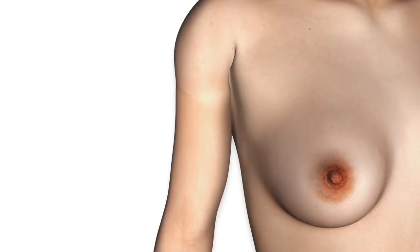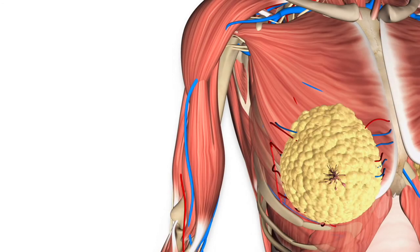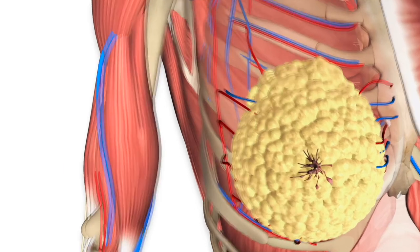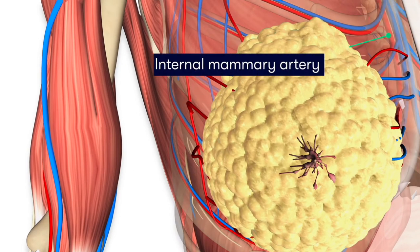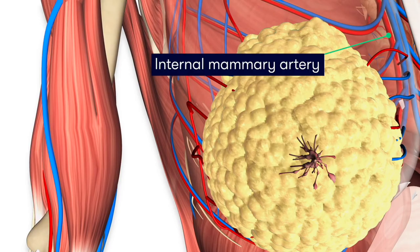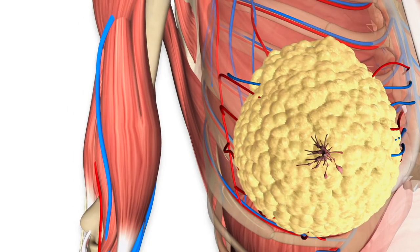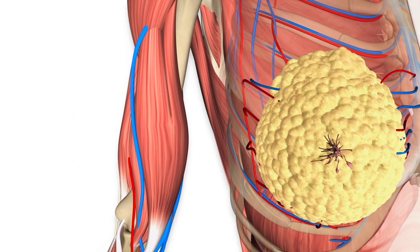The blood supply to the breast is derived from several arteries. The majority of its blood supply comes from the lateral thoracic artery, which is a branch of the second part of the axillary artery. Additionally, the breast is also served by the internal thoracic artery, which we also refer to as the internal mammary artery. It is also supplied by the posterior intercostals and the thoracoacromial artery.